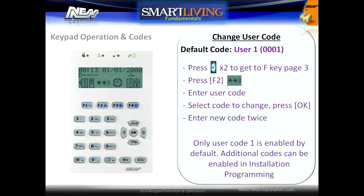To change the user code, press the right arrow key two times to go to shortcut page 3. Press the F2 key, enter in an existing master user code, and select the code to change, then press OK. User code 1 is the only code enabled by default. Additional codes must be enabled in installer programming.